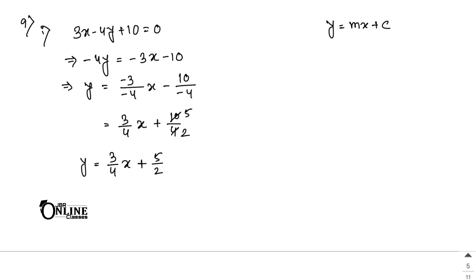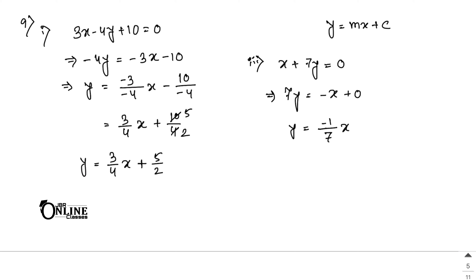Sum 9(ii) is handled similarly. For sum 9(iii), the equation is x plus 7y equal to 0. So 7y equals minus x, giving y equals minus 1/7 x plus 0. Therefore m equals minus 1/7 and c equals 0. For 9(i), m equals 3/4 and c equals 5/2.